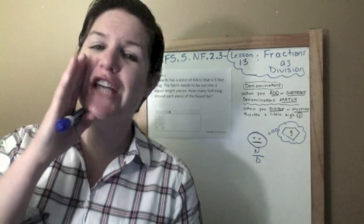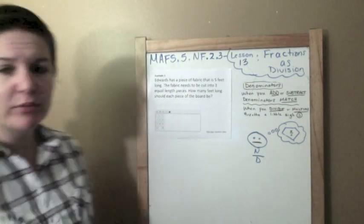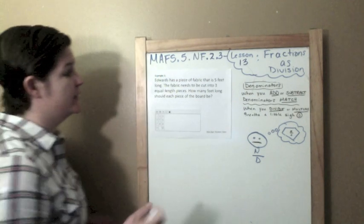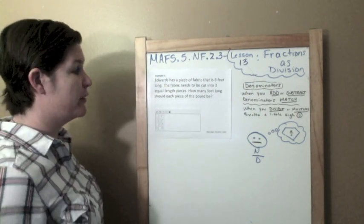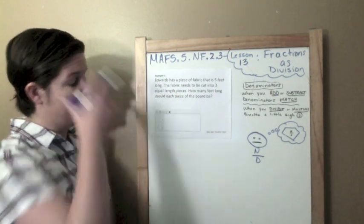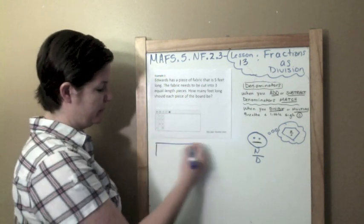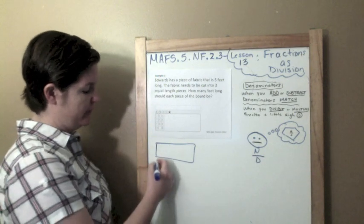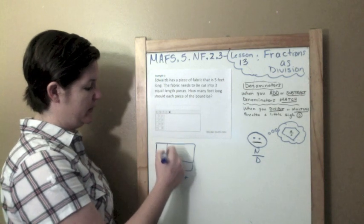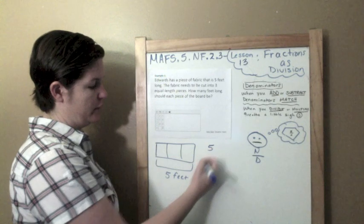Example one: Edwards has a piece of fabric that is five feet long. The fabric needs to be cut into three equal length pieces. How many feet long should each piece of board be? This is where kids are like, what? Let's think about it. We have a piece of fabric that's five feet long, and he cuts it into three equal pieces.